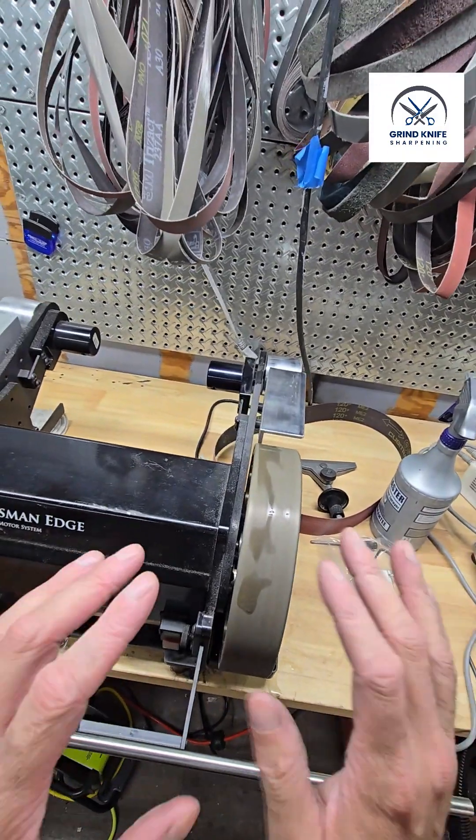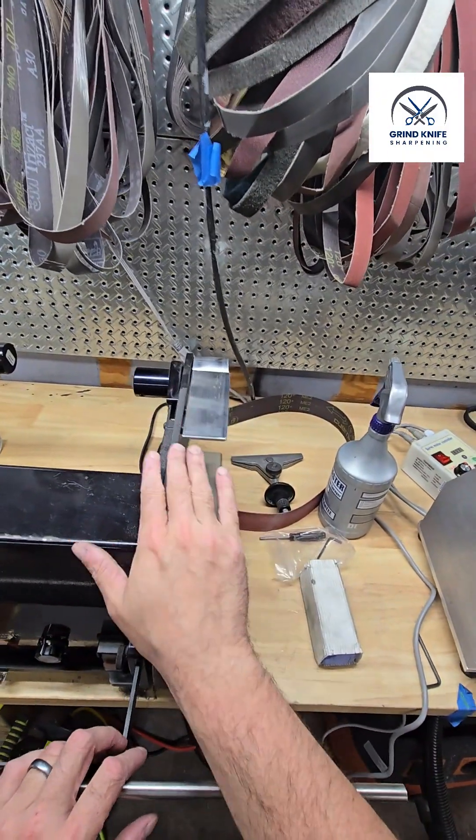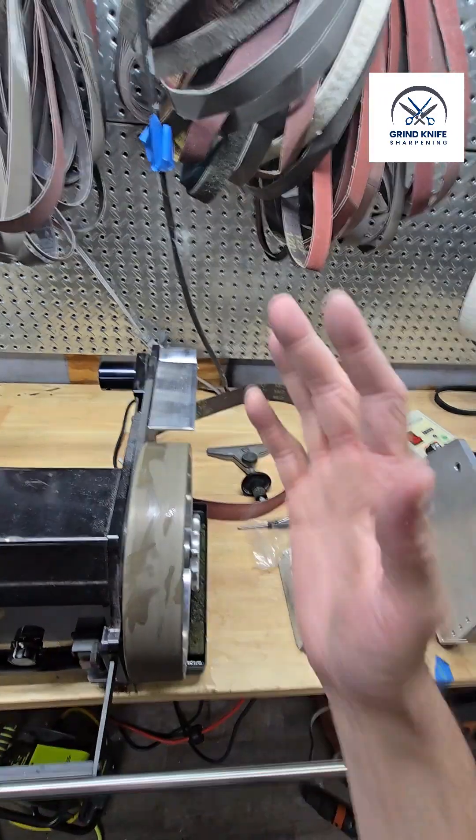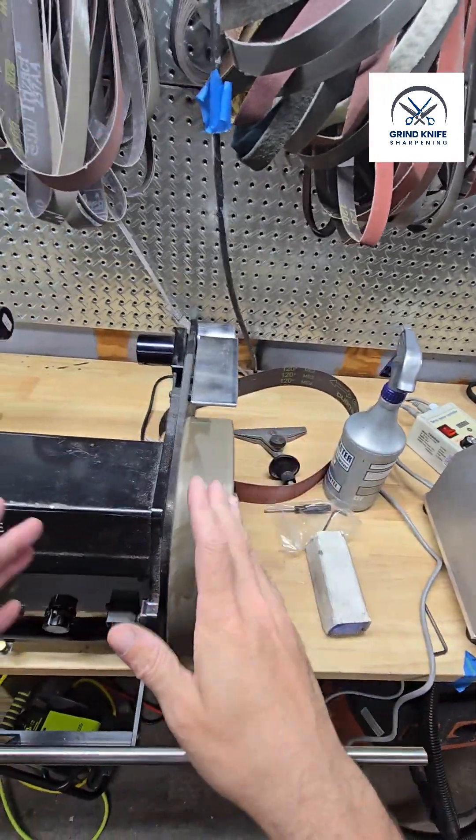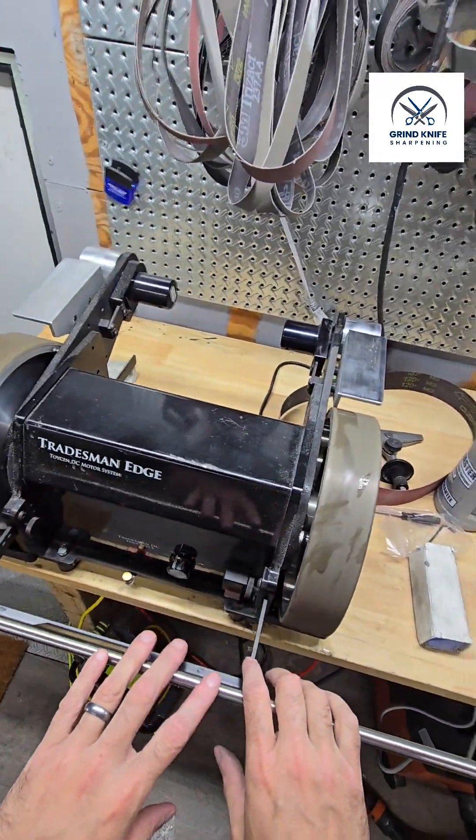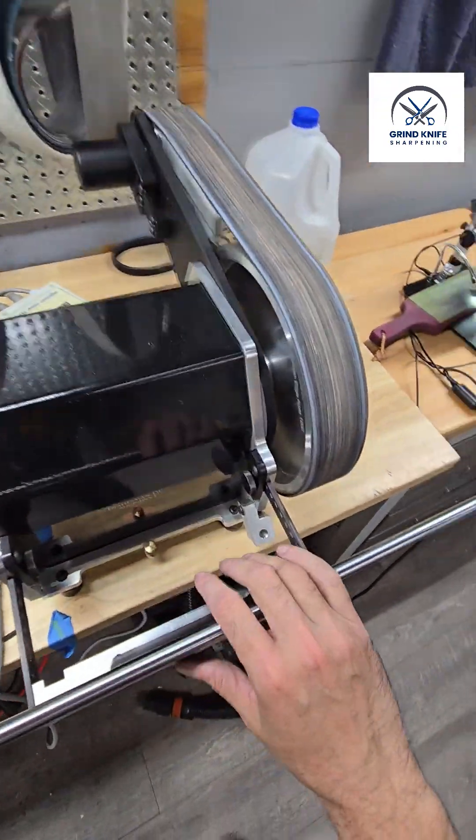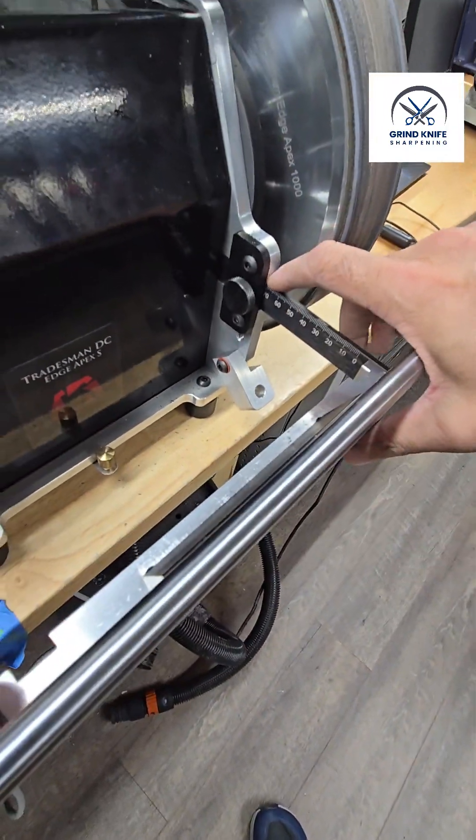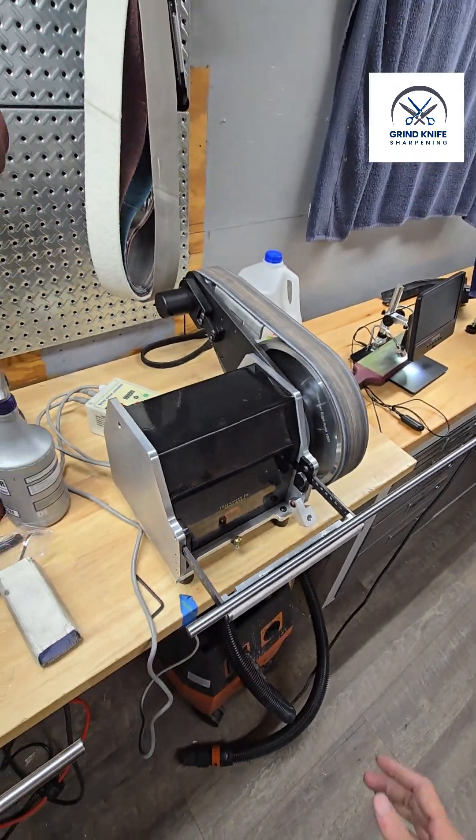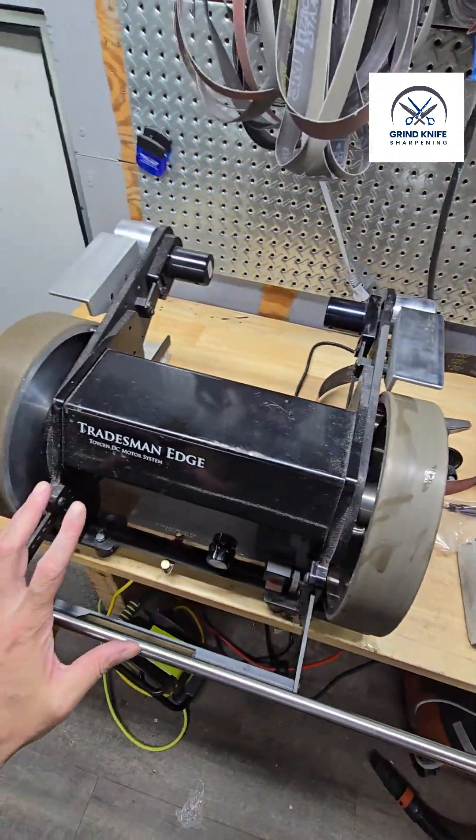So I'll demonstrate that, but the process, the only difference would be stopping, dropping the wheel, giving it a second or two to dry off, and then putting your leather belt on and continuing with your stropping steps. Everything on this machine was set up identically to this one. You can still see we're at 70.